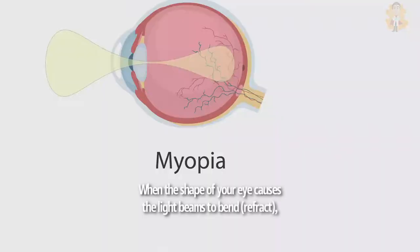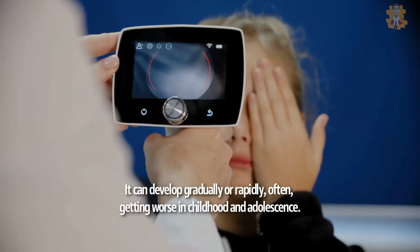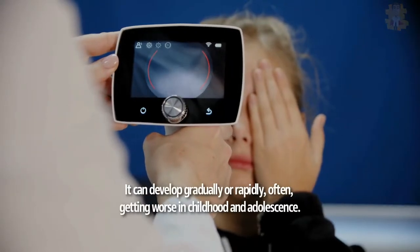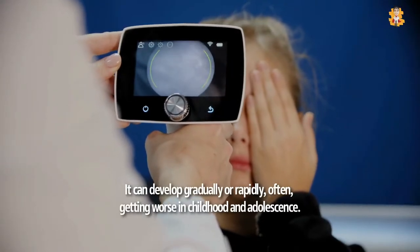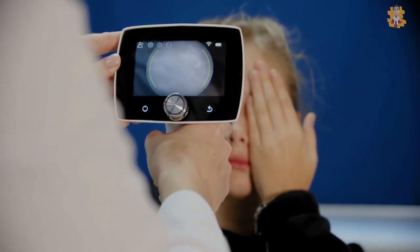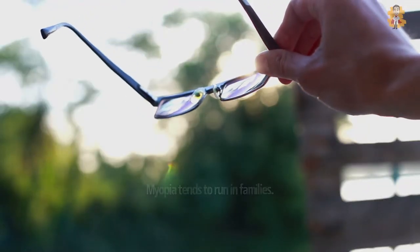When the shape of your eye causes the light beams to bend, or refract, it focuses the images in front of your retina instead of on your retina. It can develop gradually or rapidly, often getting worse in childhood and adolescence. Myopia tends to run in families.